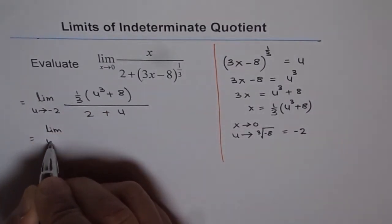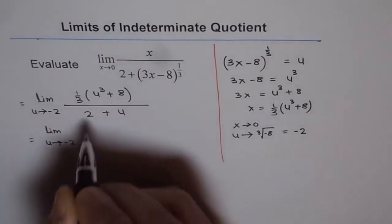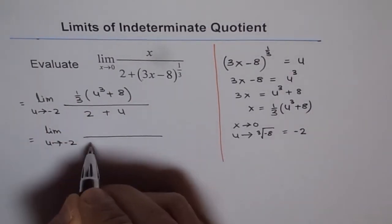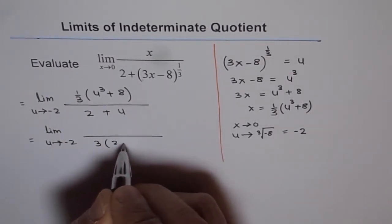So we have limit u approaches minus 2. And this 3 comes in the denominator. So we can 3 times 2 plus u.